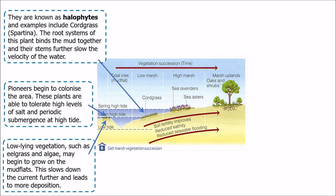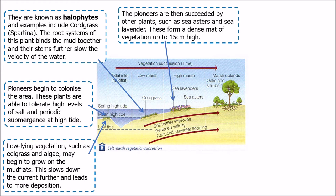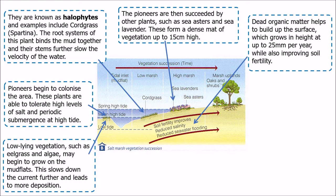Over time, the level of mud rises further until it may only be covered during a spring tide or possibly only during storms. As it rises higher above the water level, the cord grass is succeeded by other plants. The cord grass is replaced by things like sea lavender and sea aster, which form a dense mat of vegetation up to about 15 centimetres high. Eventually those species are also replaced by others, because organic matter from the plants breaks down in the soil, adding height to the salt marsh — it can grow by up to about 25 millimetres a year.